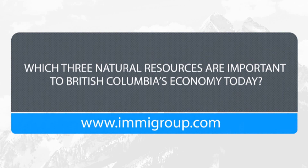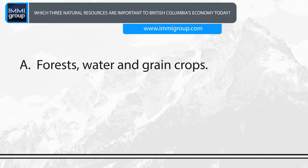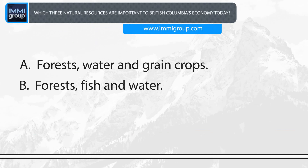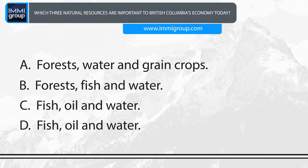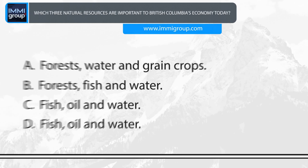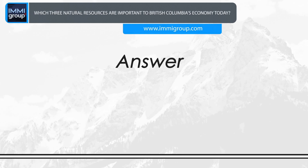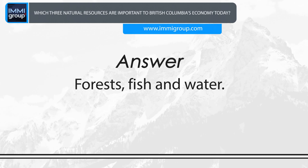Which three natural resources are important to British Columbia's economy today? A. Forests, water and grain crops. B. Forests, fish and water. C. Fish, oil and water. D. Fish, oil and water. Answer: Forests, fish and water.